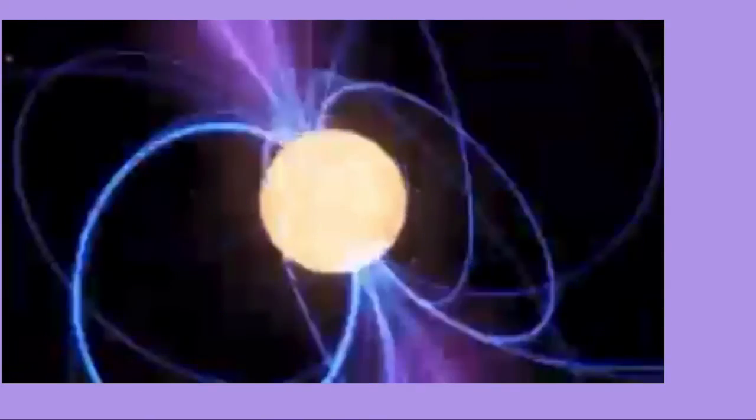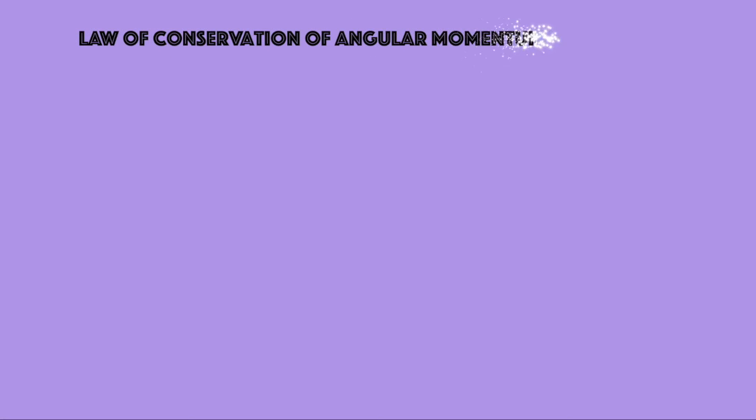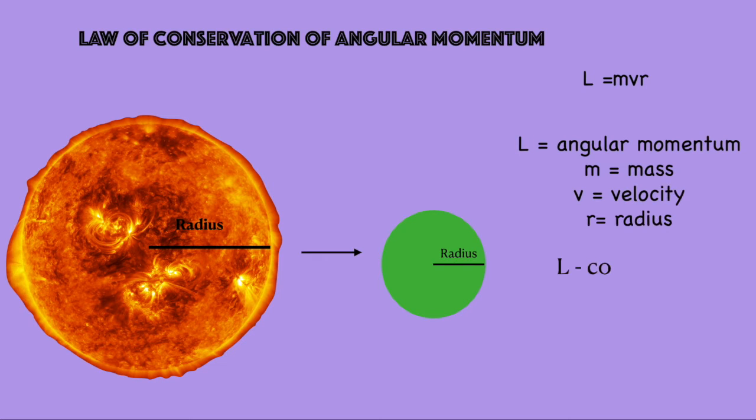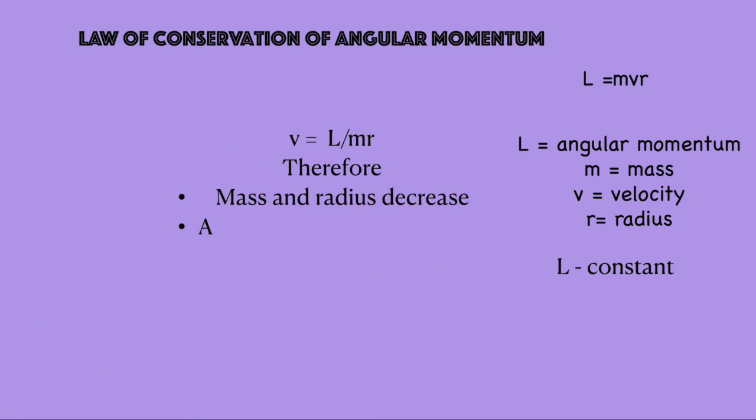This star which becomes the neutron star had a very large radius and rotated about its rotational axis. Its radius had enormously reduced while forming a neutron star and its mass had also reduced. Therefore, the rotating speed of the neutron star dramatically increases.